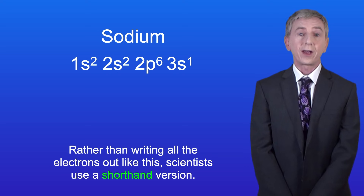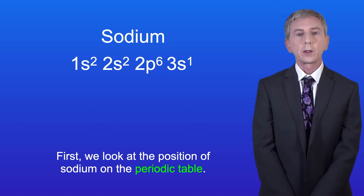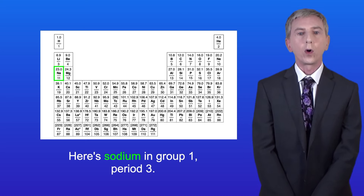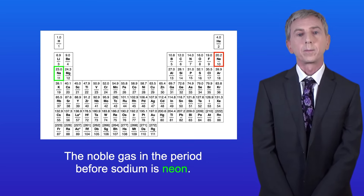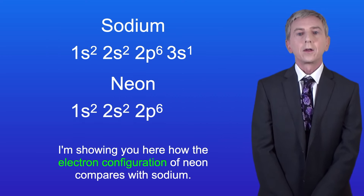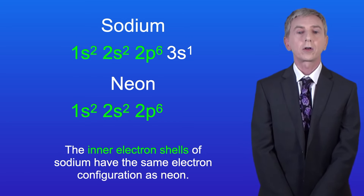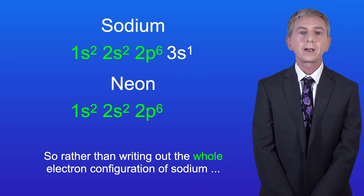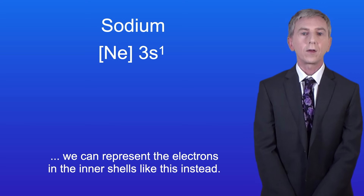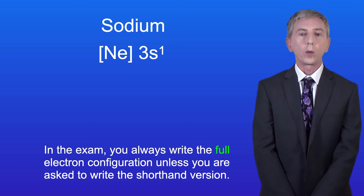Rather than writing all the electrons out like this, scientists use a shorthand version. First we look at the position of sodium on the periodic table — sodium is in group 1 period 3. We then look at the noble gas in the period before sodium, which is neon. Neon has 10 electrons, and the inner electron shells of sodium have the same electron configuration as neon. So rather than writing out the whole electron configuration of sodium we can represent the inner shell electrons using neon's symbol — this is called the shorthand electron configuration. In the exam you always write the full electron configuration unless you're asked to write the shorthand version.